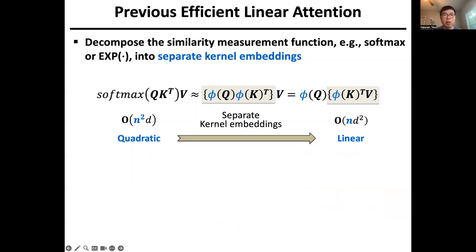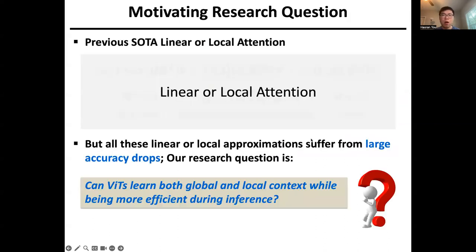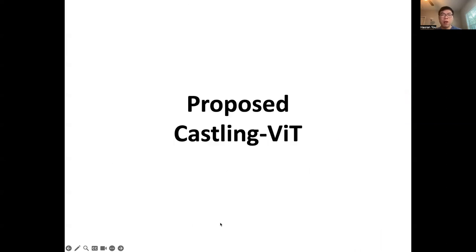The previous solution to this issue is to build efficient linear attention. The core idea is to decompose the similarity measurement function like softmax or exponential into separate kernel embeddings, for example, phi(Q) and phi(K). This way, we can change the computation order among QKV. If we first calculate KV instead of QK, the quadratic complexity will become linear. However, those linear or local approximations suffer from large accuracy drops compared to vanilla softmax quadratic attention. That motivates us to ask: can ViTs learn both global and local contexts while being more efficient during inference?